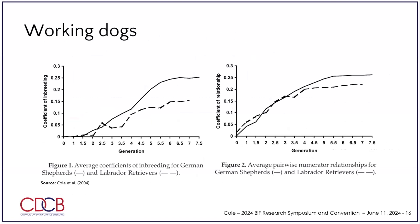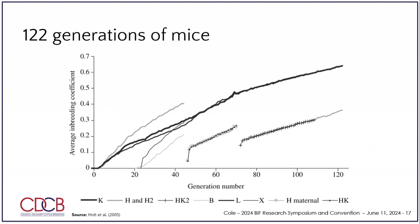This is from a selection experiment — I put it up here because it's 122 generations, which is a lot. They were selecting for litter size, and as inbreeding increased, as you would expect, fertility decreased. Infertility, early life fitness, and vigor — those are the traits most affected by inbreeding.